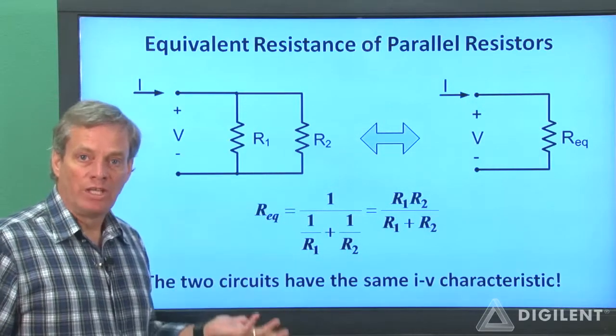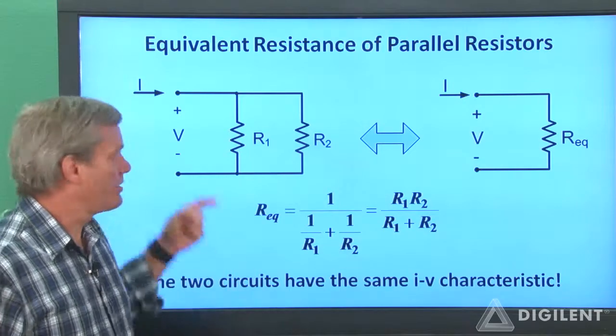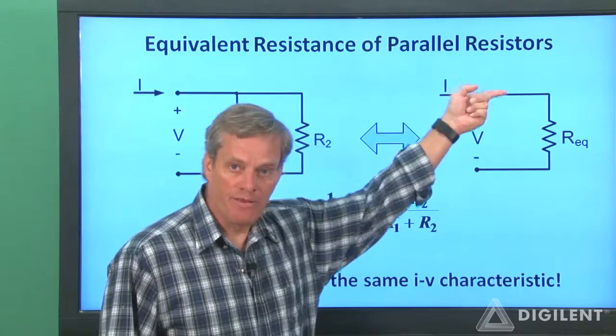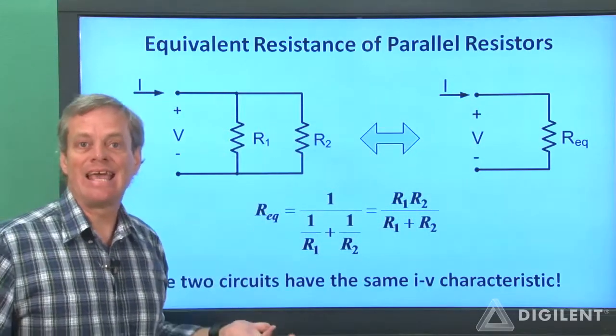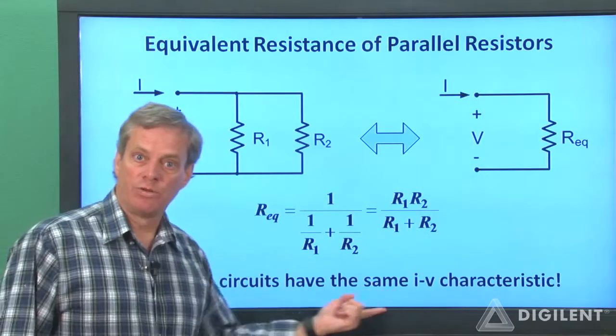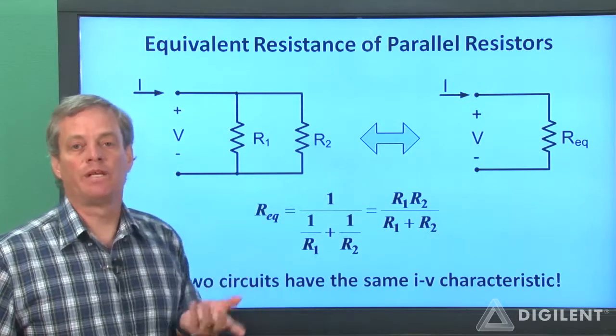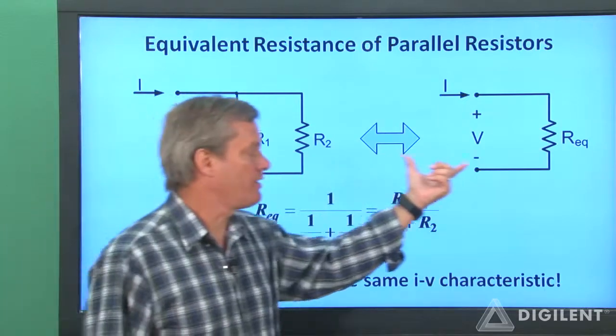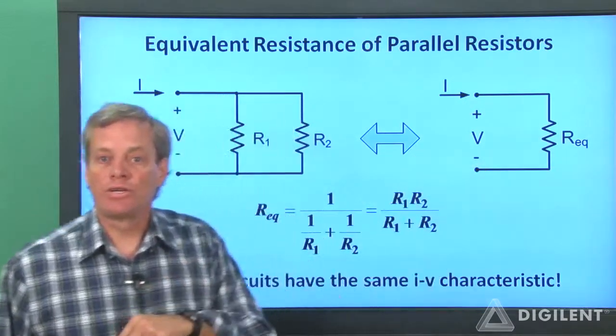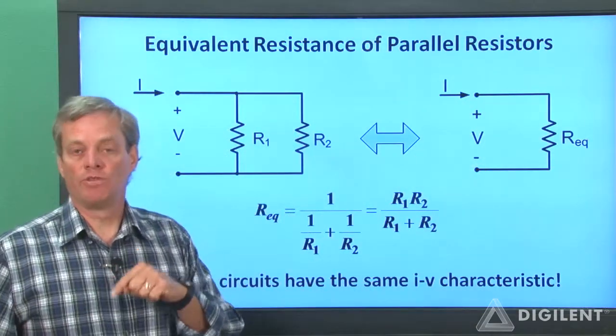Now this just means that the relationships between voltage and current at the terminals of both of these resistors is the same. Since we characterize circuit elements by their voltage-current relations, we can replace the circuit on the left with the one on the right in any circuit without changing the behavior of the overall circuit.